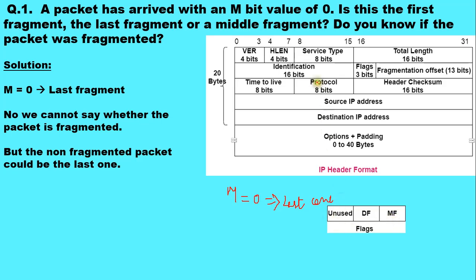The flags field has got three bits: unused field, don't fragment field, and more fragment field. Nothing is given to us about the unused field, the don't fragment field, and the fragmentation offset field.